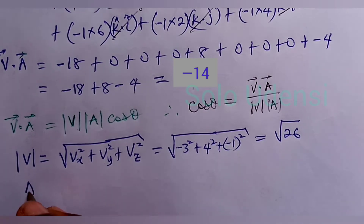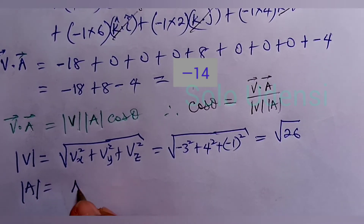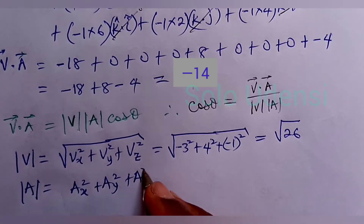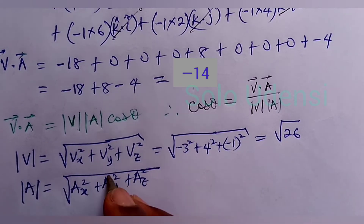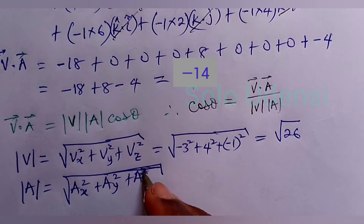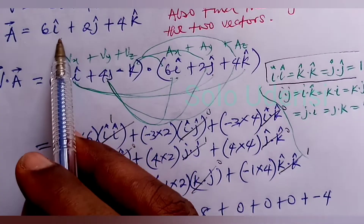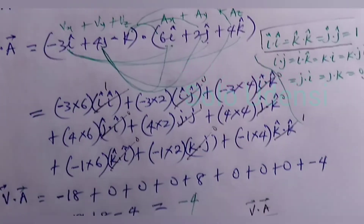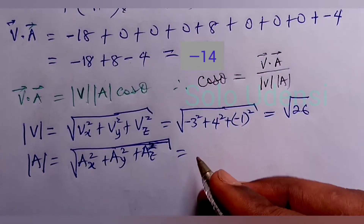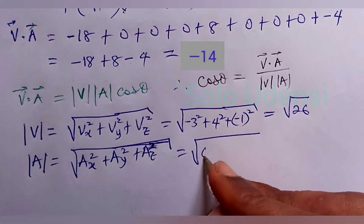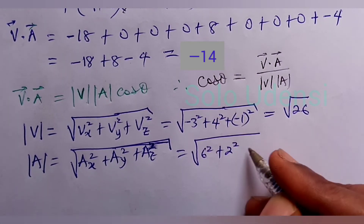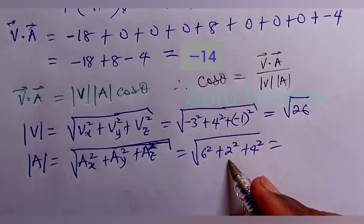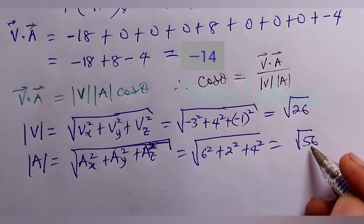We do the same for A. The magnitude of A is the square root of AX squared plus AY squared plus AZ squared, which is the square root of 6 squared plus 2 squared plus 4 squared: 36 plus 4 plus 16, giving square root of 56.